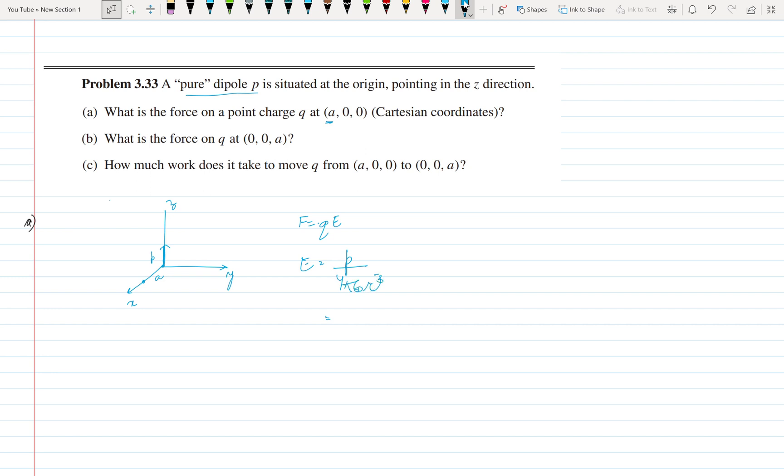Electric field in case of dipole is P upon 4 pi epsilon naught r cube times (2 cos theta r cap plus sine theta theta cap). This formula is given in Griffith's on page number 158 equation number 103.